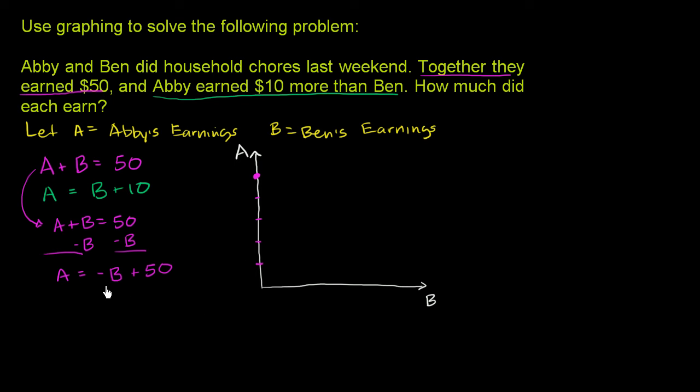We also know the slope is negative 1, where B is the independent variable. Another way to think about it: if A is 0, then B is 50. If Abby made no money, Ben would make $50. That falls purely out of this equation.